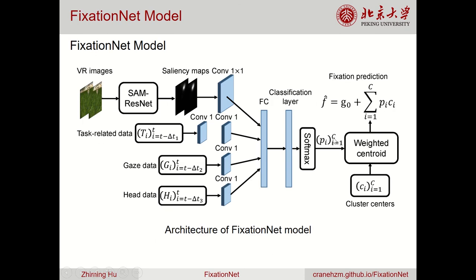This is the architecture of our model. Our model consists of a feature extraction network and a fixation prediction network. The feature extraction network extracts features from VR images, task-related data, gaze data, and head data. The fixation prediction network combines the extracted features and pre-computed cluster centers of the eye fixations to forecast users' eye fixations.